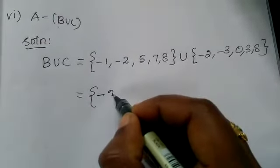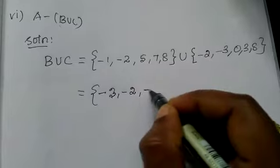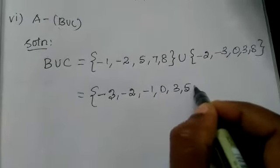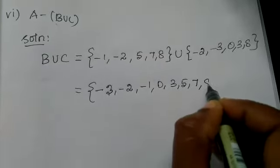Now B union C means writing all the elements in both: minus 3, minus 2, minus 1, 0, 3, 5, 7, 8.